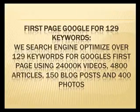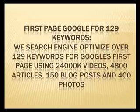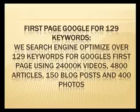We also include the first page of Google for 129 keywords. We search engine optimize over 129 keywords for Google's first page using 24,000 videos, 4,800 articles, 150 blog posts, and 400 photos.